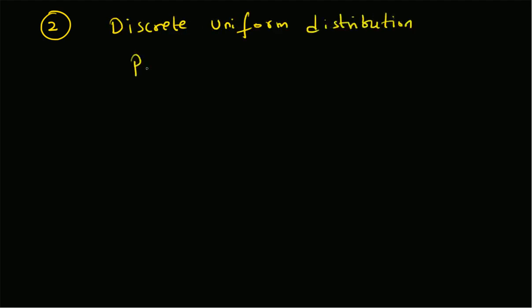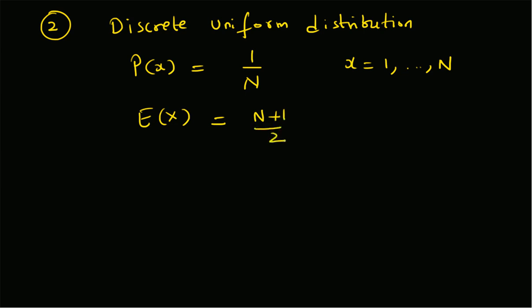Moving on to the discrete uniform distribution — the second part of the problem. This distribution is defined by the probability mass function P(x) = 1/N, where N is the range of possible values, and the random variable x can take any integer value from 1 to N. From theory, the mean of this random variable is given by (N+1)/2.